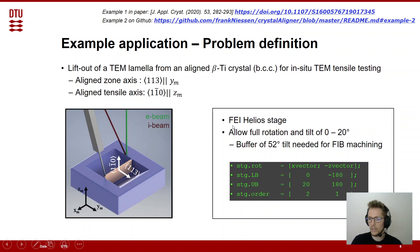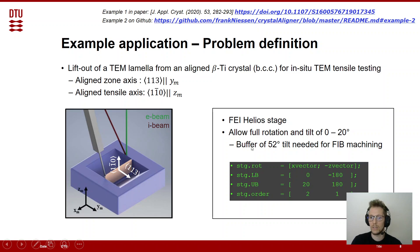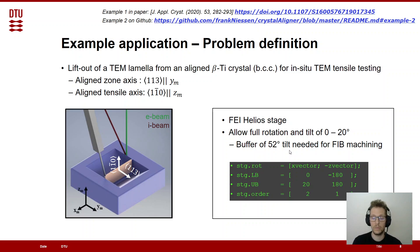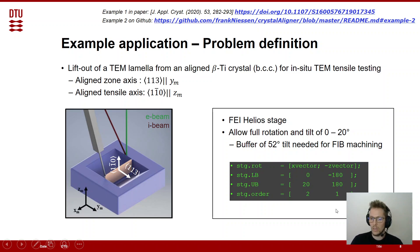We also need to define the stage — again the FEI Helios stage — allowing full rotation around the z-vector and tilt of 0 to 20 degrees. We limit ourselves to 20 degrees because we need a buffer of 52 degrees of tilt for the FIB machining. For example, if the perfect alignment requires 15 degrees of tilt, we then have to go to 15 plus 52 degrees tilt to do the FIB machining, so we set a soft limit of 20 degrees to not exceed our hard limit during FIB machining. The stage order is the same as shown earlier.